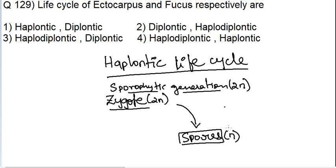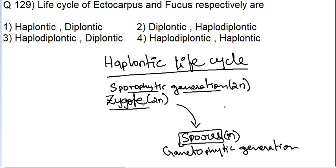Always remember students: spores do not belong to the sporophytic generation. This is a common misconception — just because the name is 'spores' does not mean they belong to the sporophytic generation. Spores belong to the gametophytic generation because their ploidy is N — they are haploid. All haploid cells belong to the gametophytic generation. The conversion from 2N to N happens with the help of meiosis, so in the haplontic life cycle you can observe zygotic meiosis.